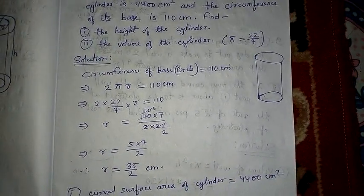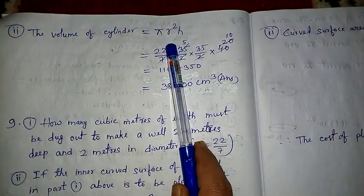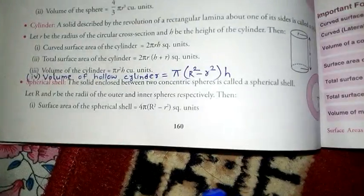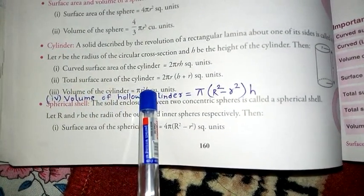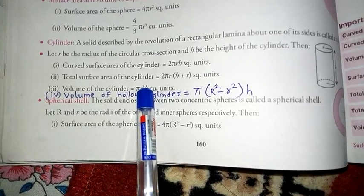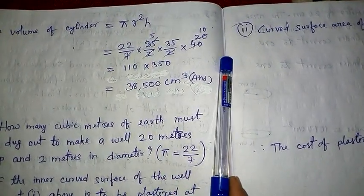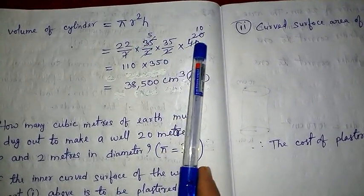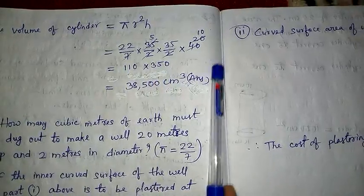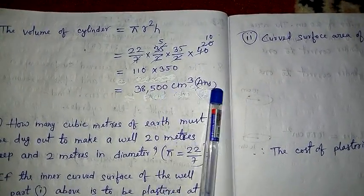Our first answer is height = 40 centimeter. Now we have to find the volume of the cylinder. Volume = πr²h = (22/7) × (35/2) × (35/2) × 40. After cancellation, the volume is 38,500 centimeter cube.